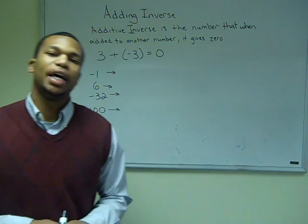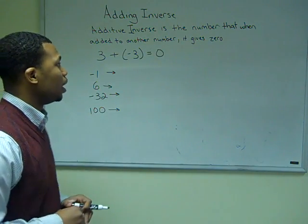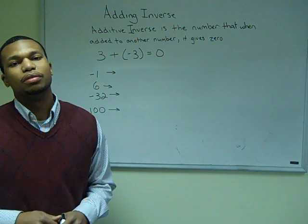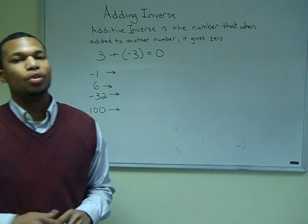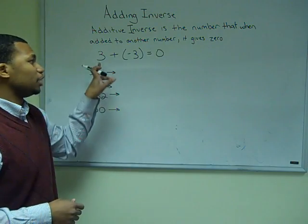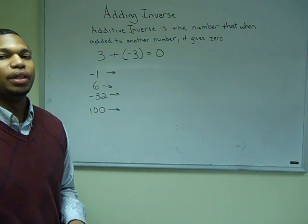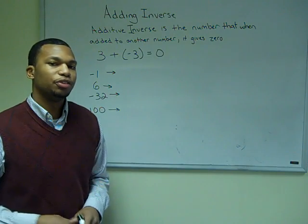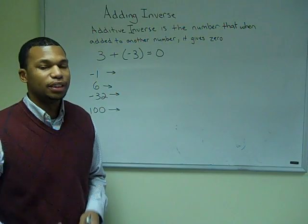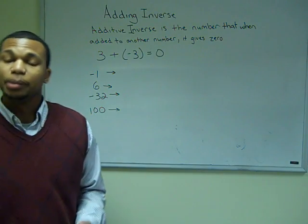Now let's take a moment to talk about the additive inverse. The additive inverse is the number that, when added to another number, always gives you zero. The additive inverse is basically the opposite. For example, positive 3 plus negative 3 equals zero. So the additive inverse of positive 3 is negative 3, and vice versa — the additive inverse of negative 3 is positive 3.